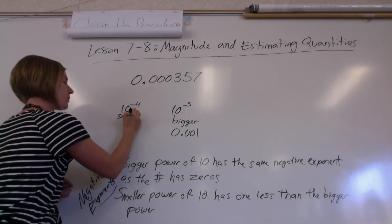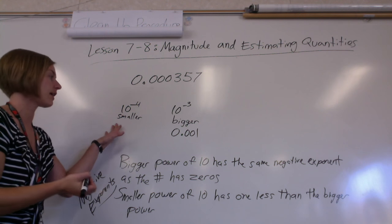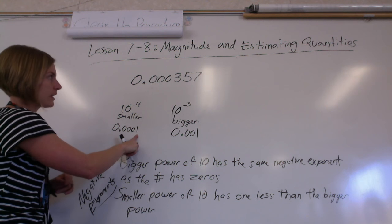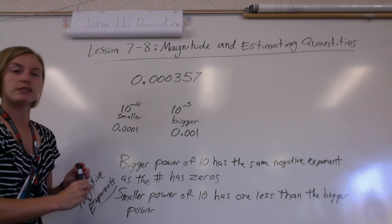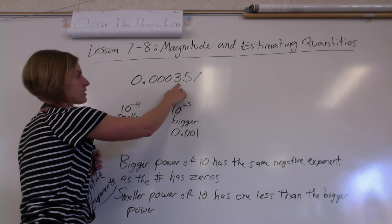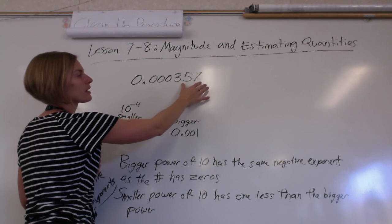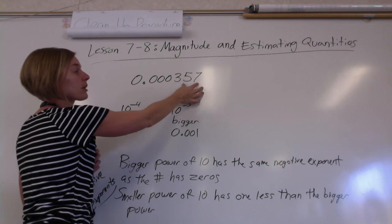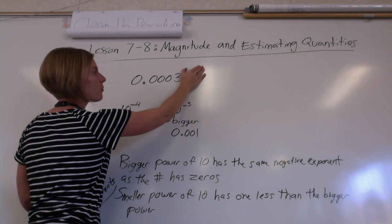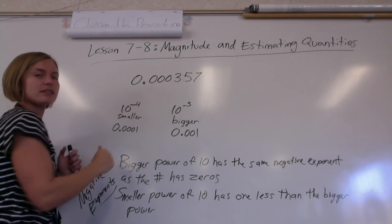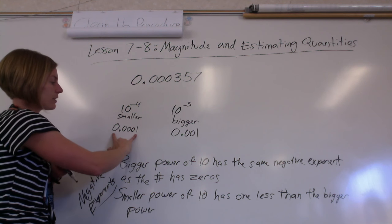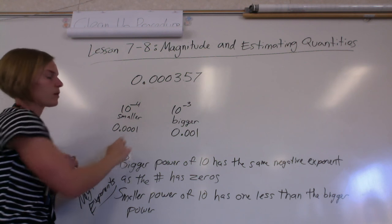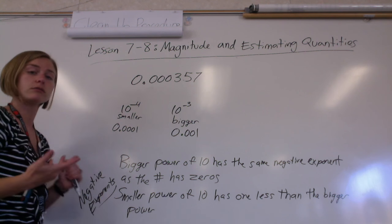The smaller power has one less than the bigger power. Remember when we go less with a negative it becomes more negative. Let's test that out — the smaller one would be three zeros followed by one, and yes, that definitely is smaller. When you're dealing with decimals you really want to pay attention to that first digit. These other ones are talking about how close we are getting to the next number. We really only care about this first number.